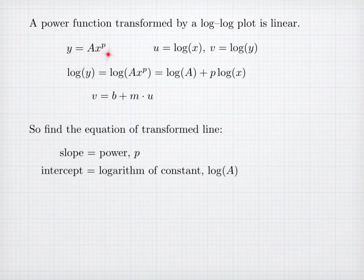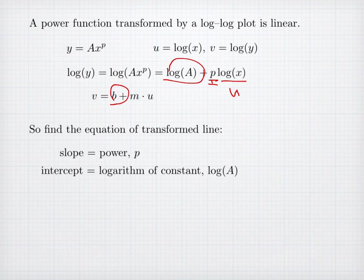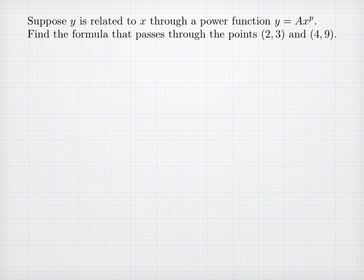To show that, if I take a logarithm of y and replace y by its formula, the properties of logarithms split the product a times x to the p into the logarithm of a plus p times the logarithm of x. Comparing that to the formula of a line — v equals slope times u plus intercept — the logarithm of a plays the role of the intercept and p plays the role of the slope. So if I find the equation of a line in log-log coordinates, the slope will be my power p and the intercept will be the logarithm of my constant a.